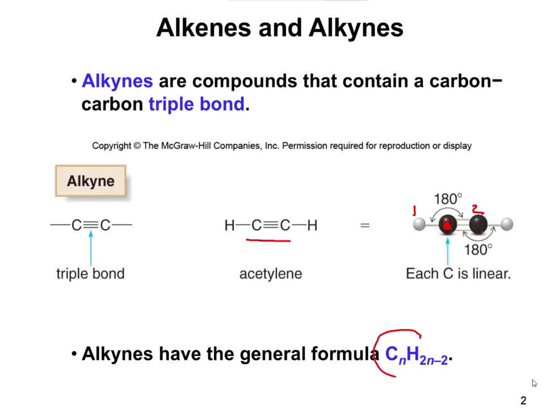Alkynes are going to have a formula of CnH2n-2. Basically, every time you add a double bond, you're going to lose two hydrogens. So we went from an alkane at 2n+2 hydrogens, to an alkene at 2n, and then for an alkyne, it's 2n-2. In order to form double bonds, you have to remove hydrogens so that your carbons don't violate the octet rule — carbons always end up with four bonds total and eight electrons around them.